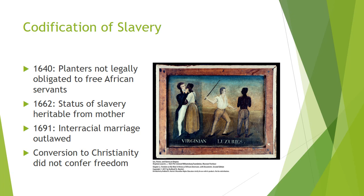The point of making the mother's condition determine the child's condition was that planters could have children with their black servants and those children would be enslaved — something the Virginia legislature was perfectly fine with. Normally under English law, paternity established inheritance, so this maternity-based status determination was new and different. Normally, women's labor was considered domestic and not taxable. These were big changes from existing law, happening in Virginia to codify slavery as a labor system.